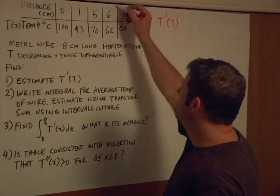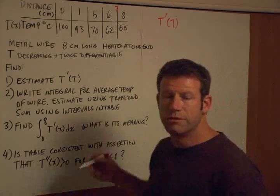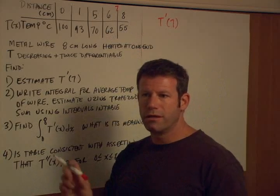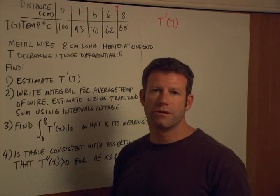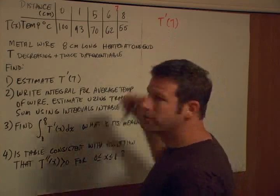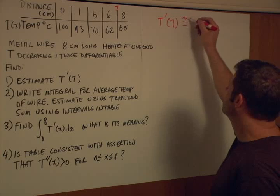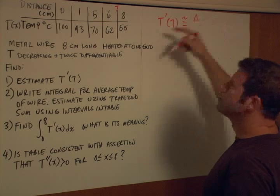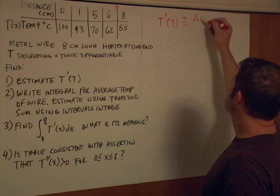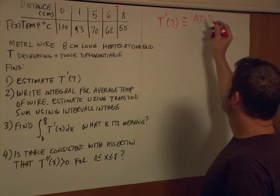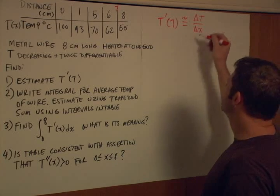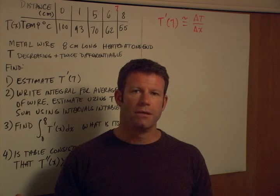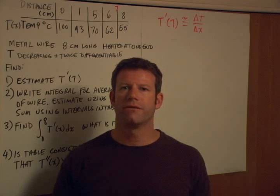Seven would be right here, and it happens to be equidistant between six and eight, so that's convenient. We can say that the slope over this short interval is going to be close to the slope of T at seven — the derivative at seven. So this is approximately equal to the slope over this interval: change in temperature divided by change in distance. We don't want change in distance over change in temperature — inches per degrees Celsius doesn't have any physical meaning.